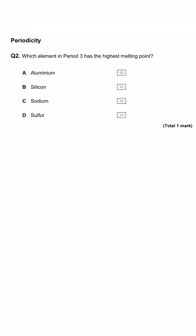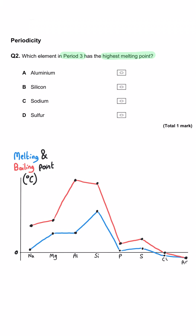Which element in period 3 has the highest melting point? Here are the patterns for melting point and boiling point across period 3, with the melting point being the blue line. You can see that the one with the highest melting point is silicon, and we just need to check that silicon is one of the options — it is, it's option B. So B is the correct answer.